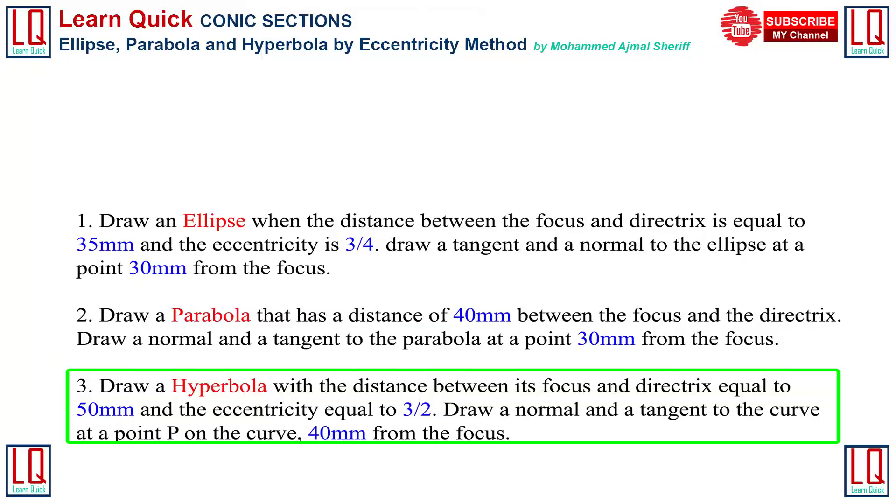In case of hyperbola, calculate the VF and VB distance as we did for ellipse. If you calculate, you will obtain VF 30 mm and VB 20 mm.